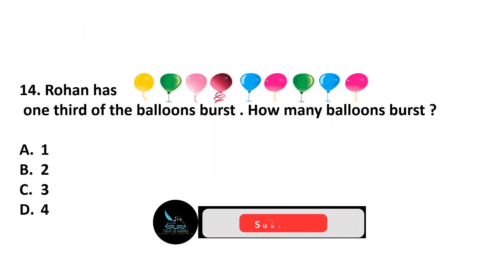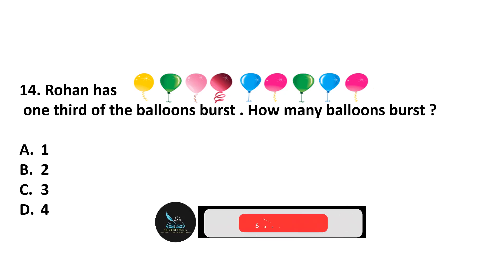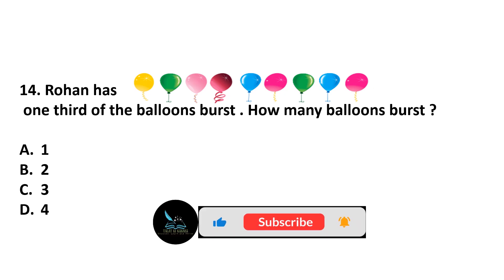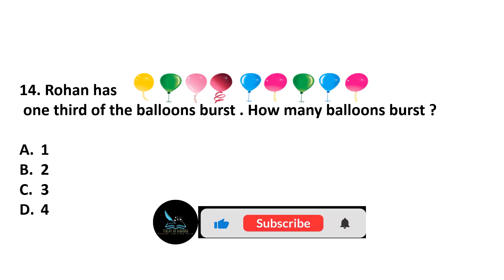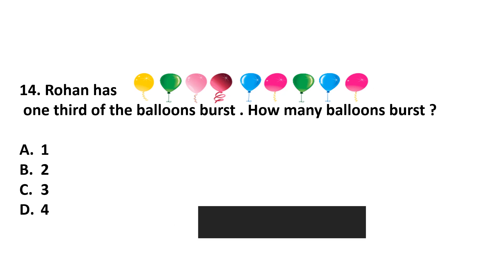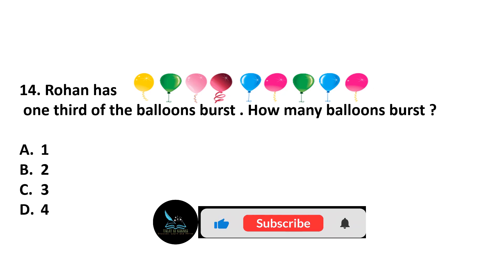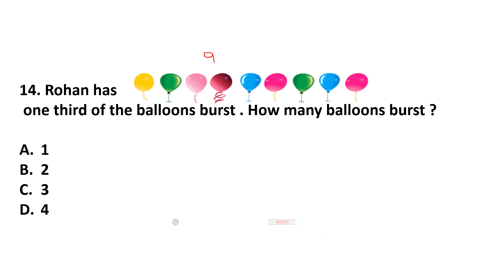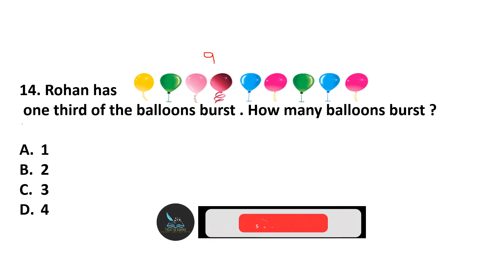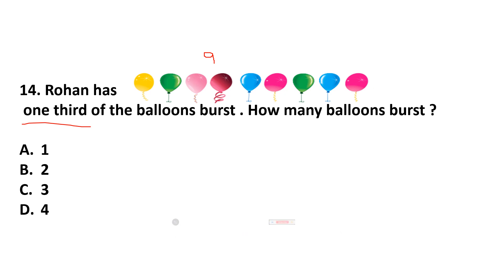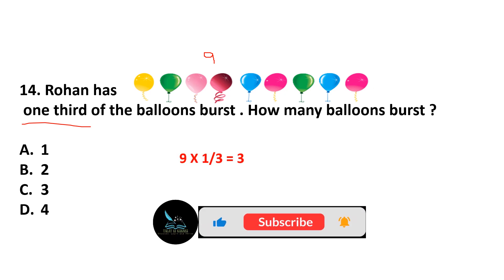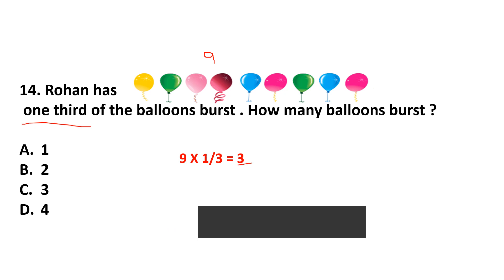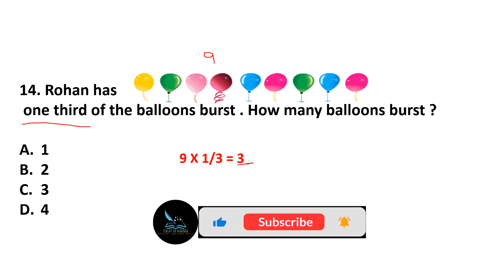Question 14: Rohan has some balloons and one third of the balloons burst. How many balloons burst? Counting the balloons: there are 9 total. One third of 9 is 9 multiplied by 1/3, and since three threes are nine, the answer is 3. Three balloons were burst. Answer: option C.